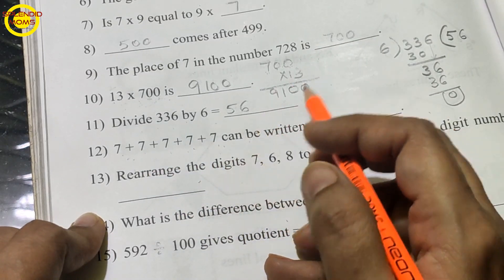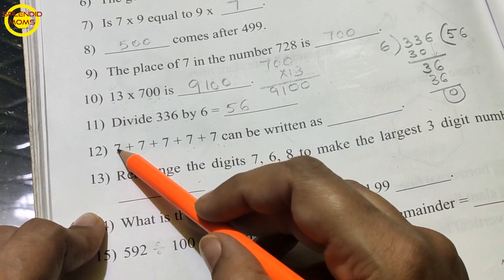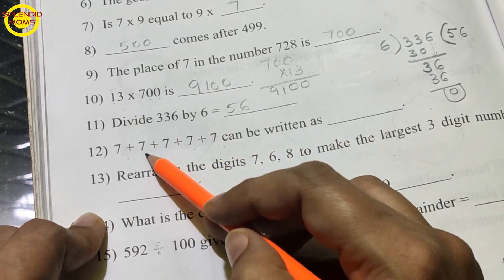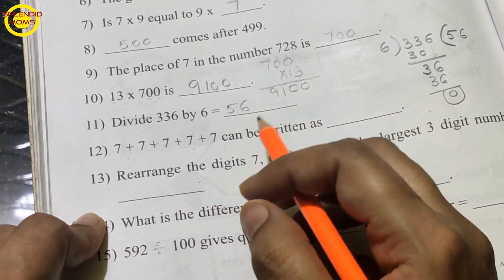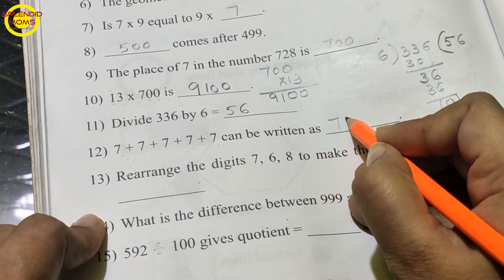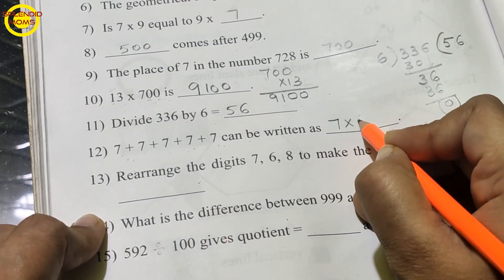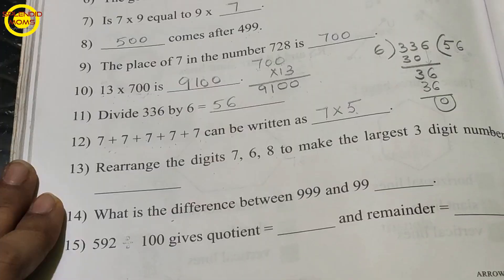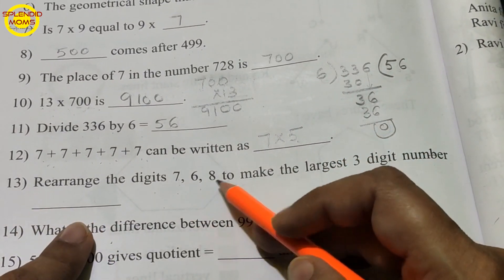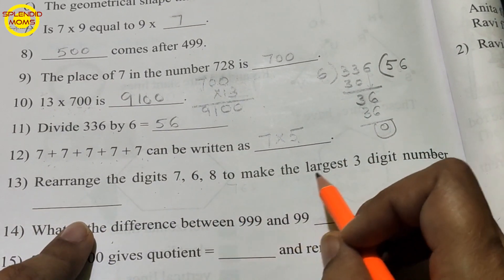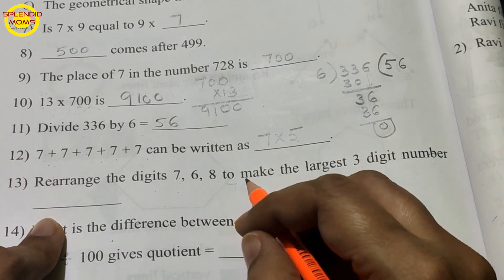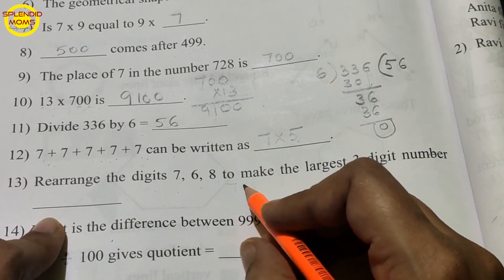7 plus 7 plus 7 plus 7 plus 7 — this is repeated addition, and repeated addition is nothing but multiplication. 7 is added 5 times here, so 7 into 5 gives the answer.